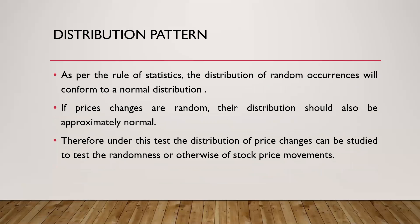The next test is the distribution pattern. In statistics, the distribution of random numbers forms a normal distribution — you get a bell-shaped curve when you plot random numbers in a chart. If price changes are random, as the weak form efficient market suggests, then the distribution should also be a normal distribution. So under this test, the distribution of price changes is studied to test the randomness of stock price movements. If plotting the numbers gives a bell-shaped or normal distribution, then it means the price changes are random in nature and it proves that weak form EMH is true.